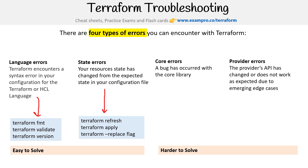For state errors, the idea is that we might want to use refresh, apply, or replace — everything we saw in the drift section.